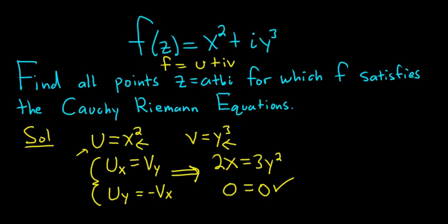All right, so now we can go ahead and write down the answer. So we want the set of all points. That's the set of all complex numbers z in C, such that z is equal to a plus bi. And what do we know about a and b? Well, we know that 2x is equal to 3y squared.